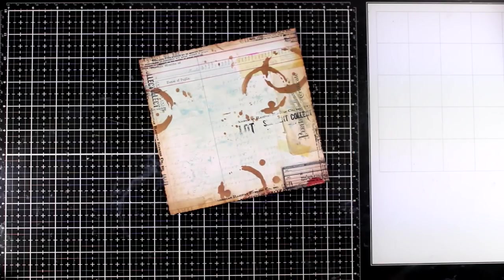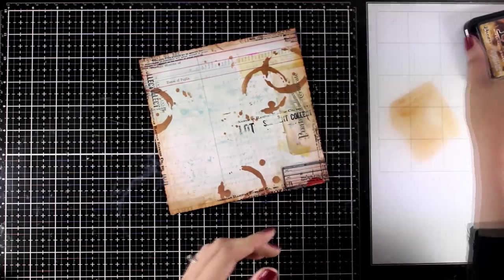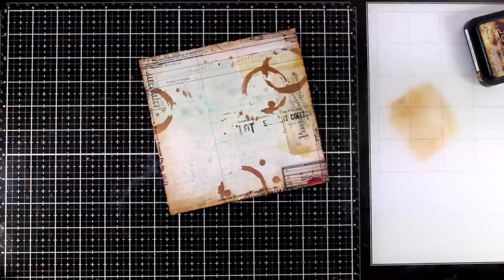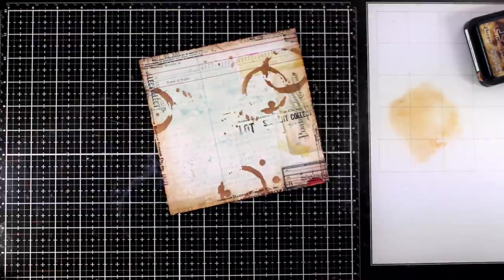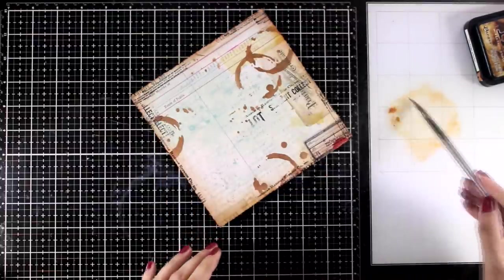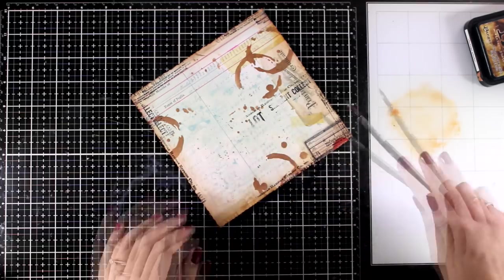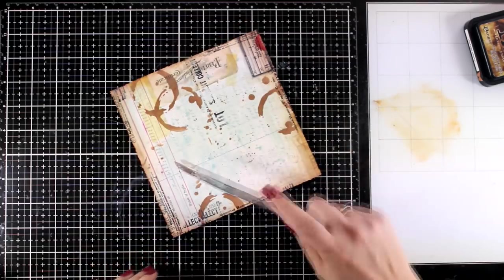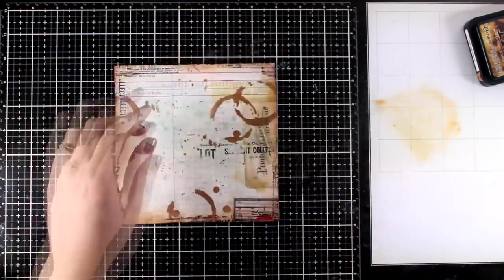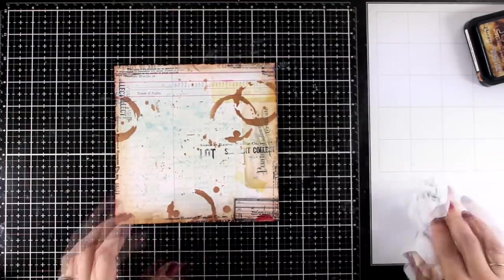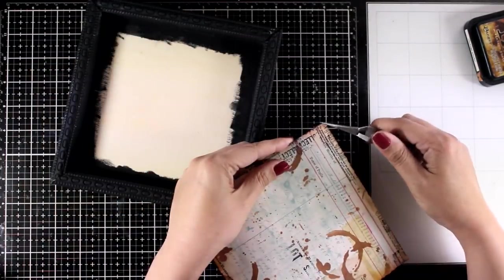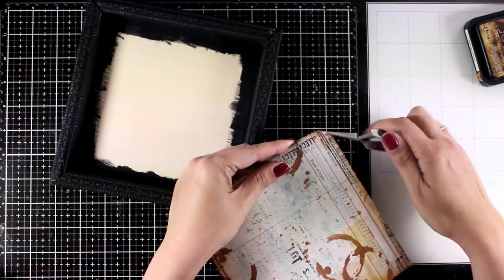As a finishing touch for my background I'm going to add a little bit of Vintage Photo but in a form of splashes. So I did smudge that ink pad on my glass mat, added a lot of water and now I'm adding the splashes with the brush.